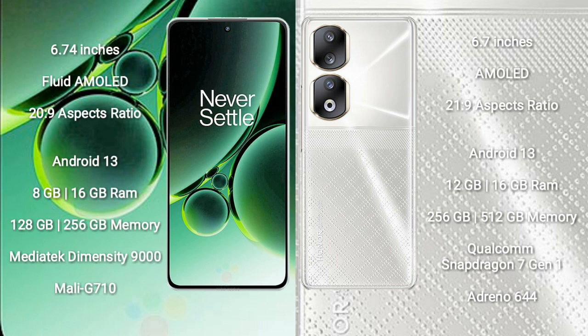OnePlus Nord 3 runs on the Android 13 operating system. Honor 90 also runs on the Android 13 operating system.